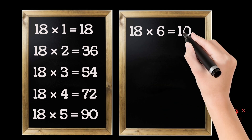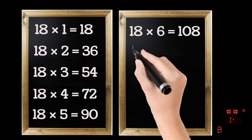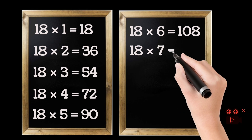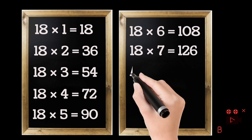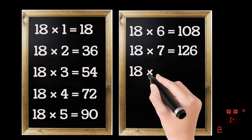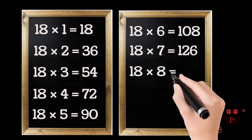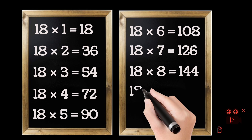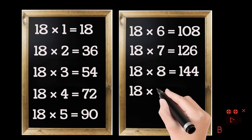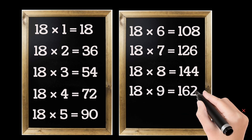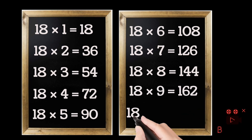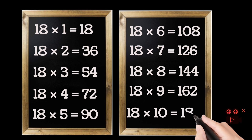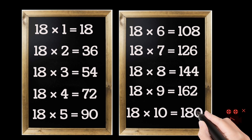18 sixes are 108. 18 sevens are 126. 18 eights are 144. 18 nines are 162. 18 tens are 180.